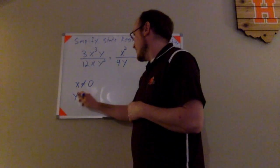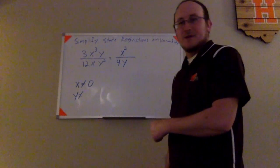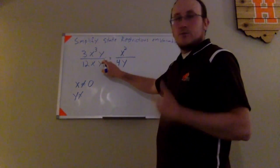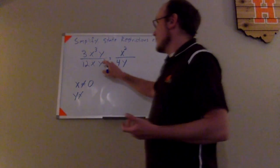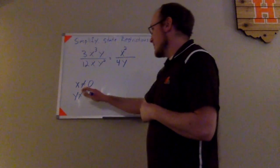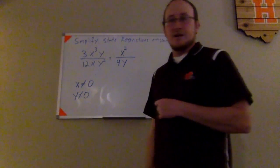There is a value of y that we can't have here because it would also make the denominator equal to 0. If y was 0, 0 squared would be 0, and therefore this entire denominator would become 0 and would become undefined. So we also have the restriction on the variables here that y cannot be 0.